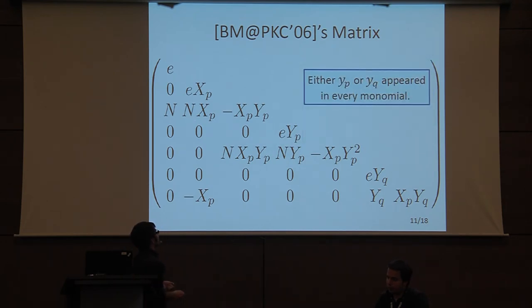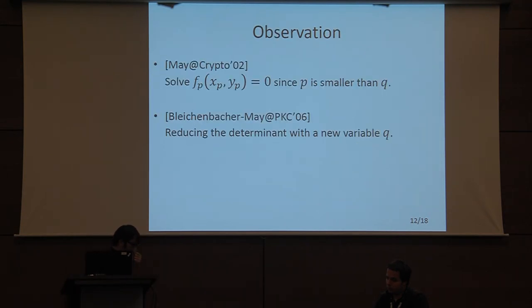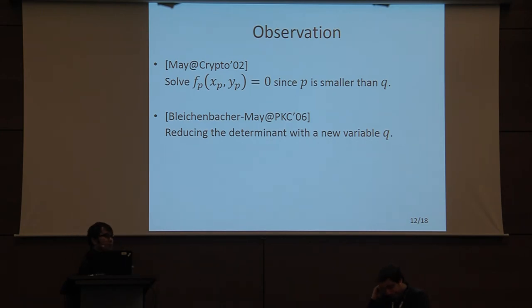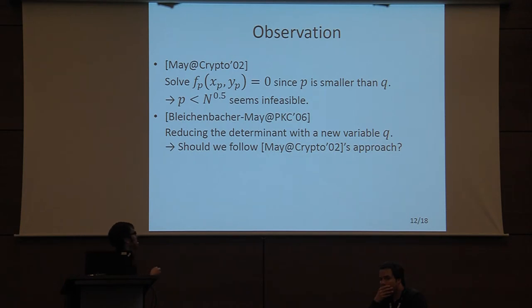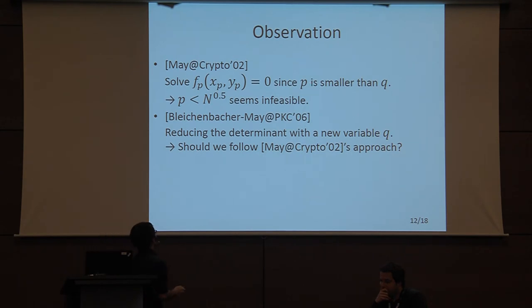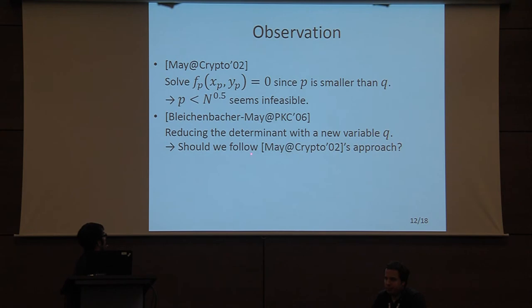Either y_p or y_q appears in every monomial. May solves the modular equation fp = 0 since p is much smaller than q. Bleichenbacher-May takes the same approach but reduces the determinant with the new variable y_q. Since May relies on p being smaller than q, we believe this approach cannot reach the balanced case N^0.5 — we think the approach is infeasible for that bound.